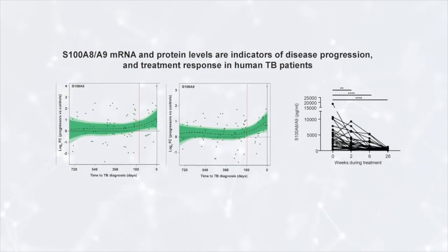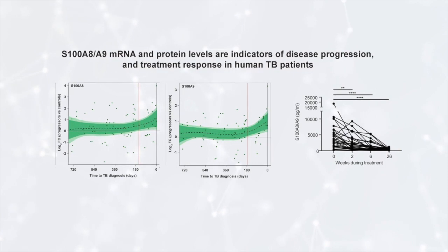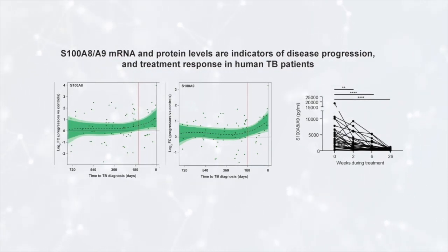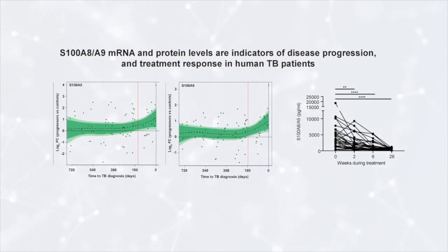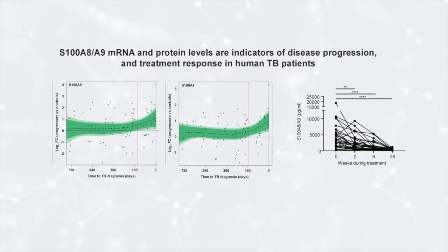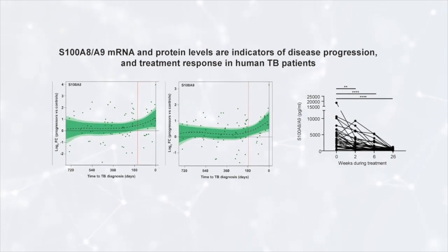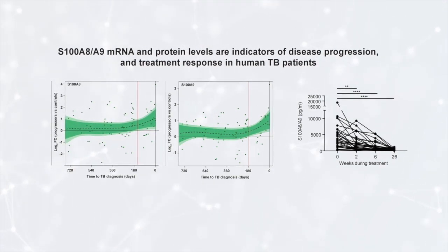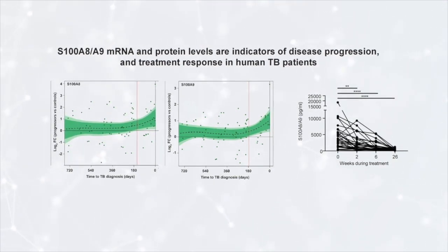In our human studies, we found that expression of S100A8A9 mRNA transcripts in whole blood were upregulated when MTB-infected individuals progressed towards clinical active disease.